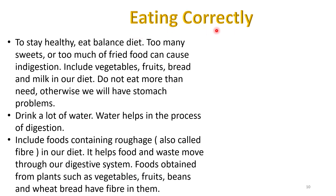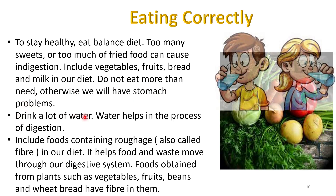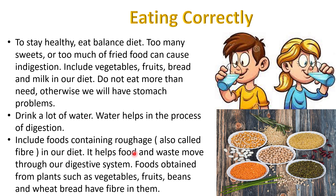Now let's see how to eat correctly to have a healthy digestive system. To stay healthy we must eat a balanced diet. Too many sweets or too much fried food can cause indigestion. We must include vegetables, fruits, bread, and milk in our diet and we should not eat more than we need, otherwise we can have stomach problems. Drink lots of water as water helps in the process of digestion. We must also include foods containing roughage, which is also called fiber, in our diet, as it helps food and waste move through our digestive system.